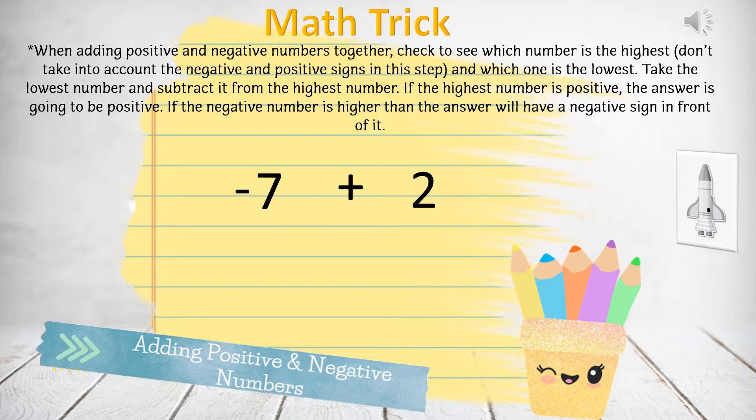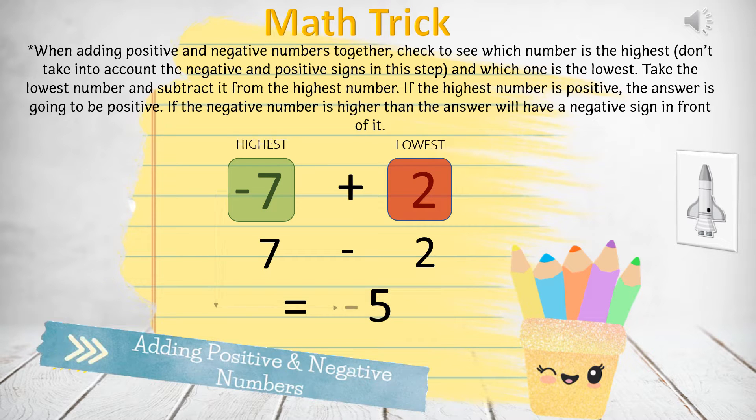So 7 is the highest and 2 is the lowest. We will subtract the lowest from the highest. 7 minus 2 and that gives us 5. Now don't forget to add the negative sign in front of the 5 because the highest number was negative.